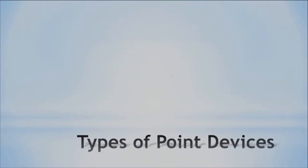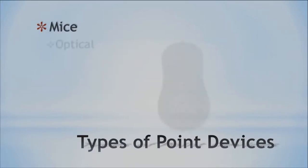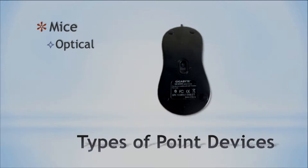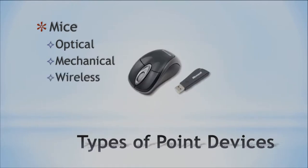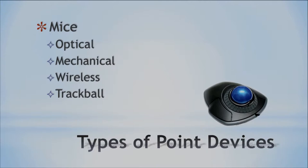We have two different types of pointing devices. First, we have our mice — optical, which is your more standardized type nowadays that we use with desktop computers. And then we also have our mechanical, which you can see has a little ball and wheels inside — it was all mechanical. I can remember using these as a kid and getting really fed up because dust and dirt would get caught in there, and you'd have to take the little ball out and clean it. Optical mice make our lives a lot easier. We also have wireless mice so we don't need a cord, and those are very commonplace now. And then finally, we have our trackball, which has a ball in the middle that you roll around, with buttons on the sides to navigate.